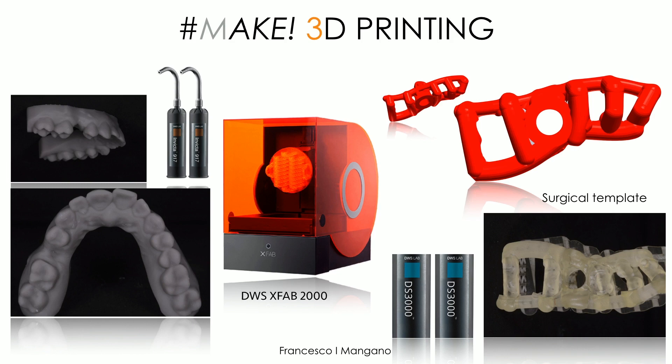In the first cases we used the DWS XFAB 2000, a desktop 3D printer, in order to print the models with Invicta resins, and also the surgical guide with a resin called DS3000 — a transparent resin that is absolutely compatible for use in surgery because it can be sterilized, and it doesn't undergo large deformation over time, so if you use these guides within a reasonable time frame, like two to three weeks to one month, then they fit very well.